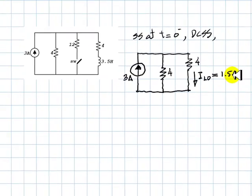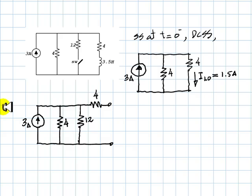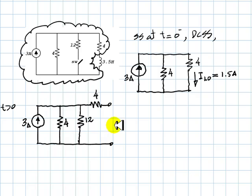That is the first part of the solution. Now, for T greater than 0, we find the Thevenin equivalent seen by the inductor. With the switch closed, because it is after T equals 0, the inductor sees all of the circuit, which is represented here. Finding the Thevenin equivalent of the circuit is pretty straightforward.